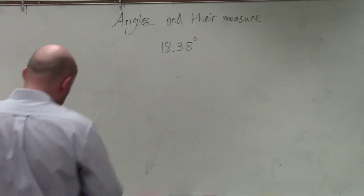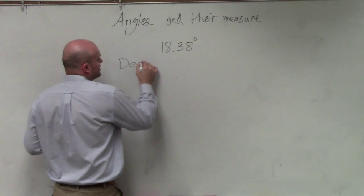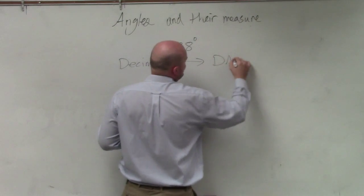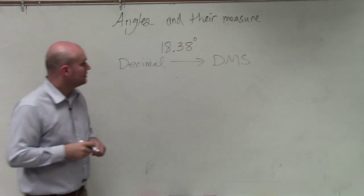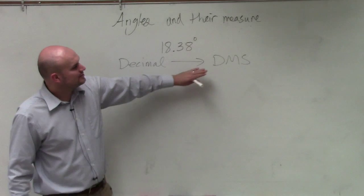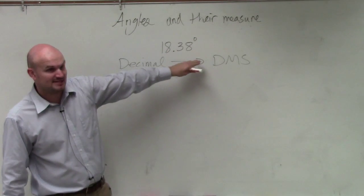So what we're going to do, what we're going to convert here, is how to rewrite a number in decimal form to DMS form. This is in decimal form. You guys see how this is a degree and it has a decimal.